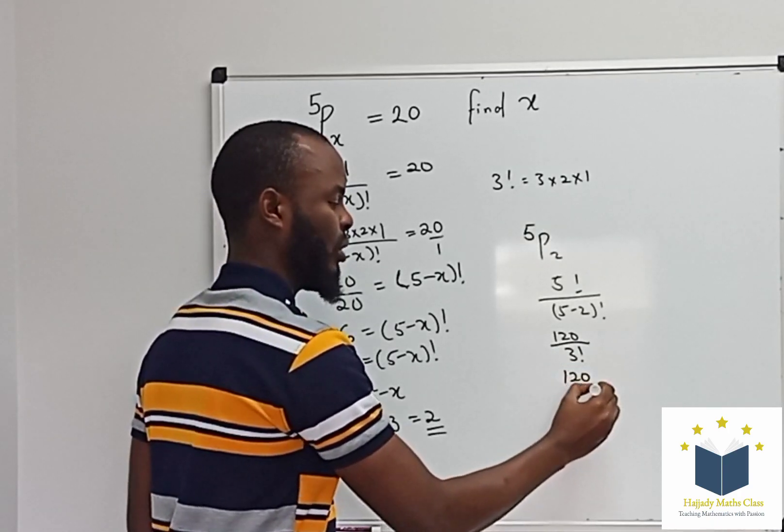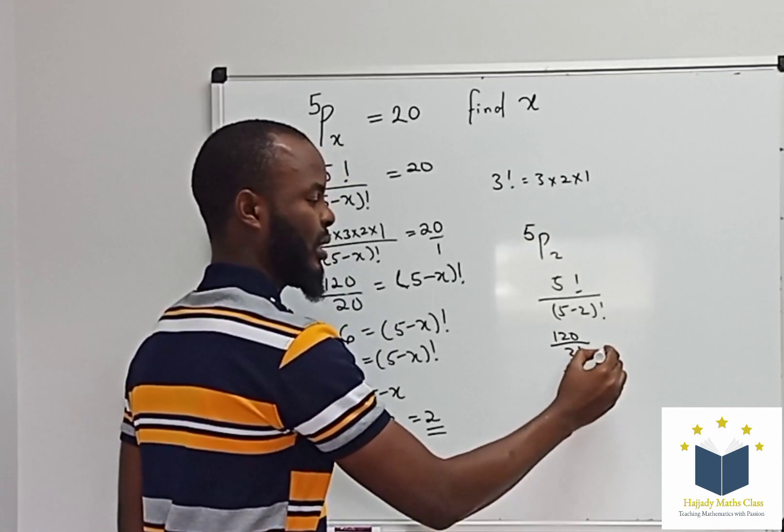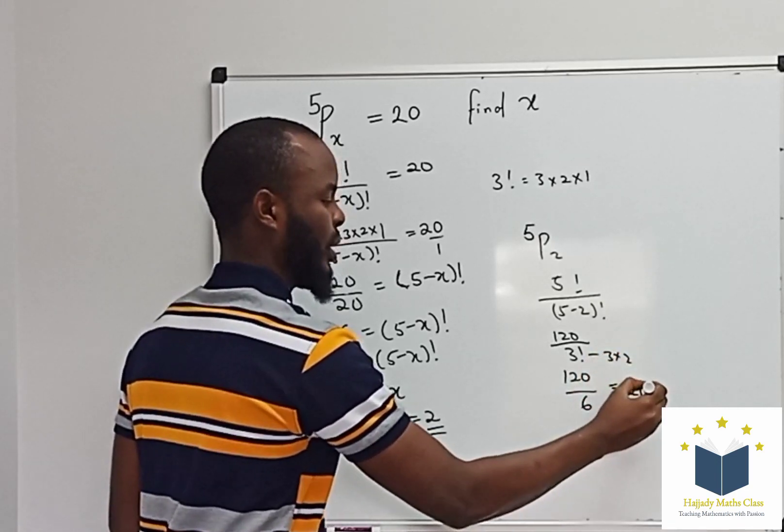Which is 120 over 6, which is 3 times 2. This gives us 20.